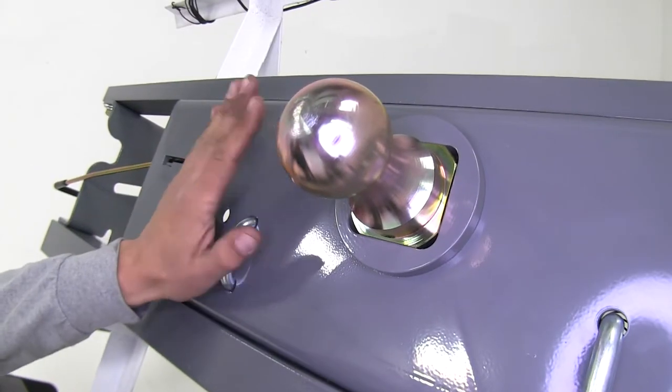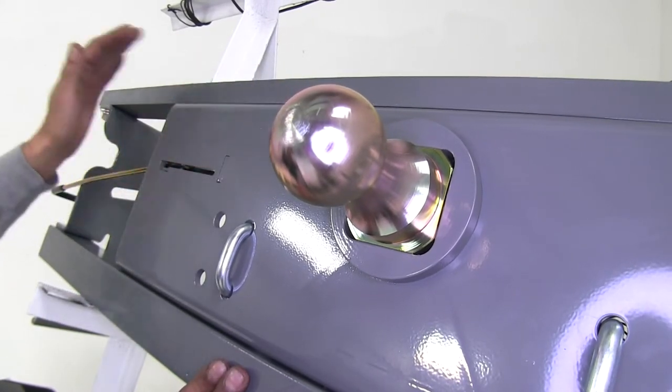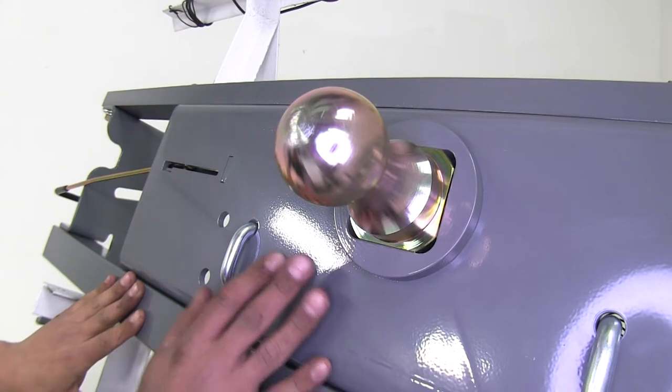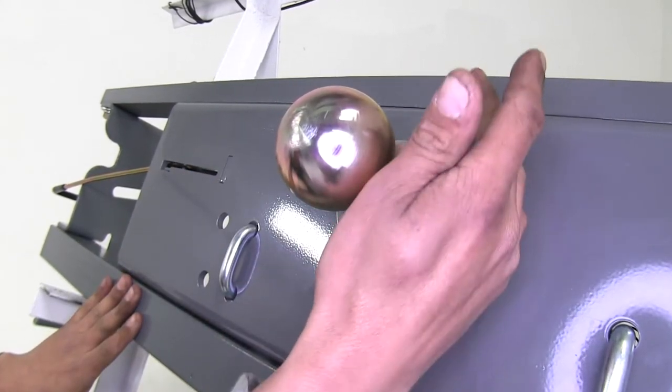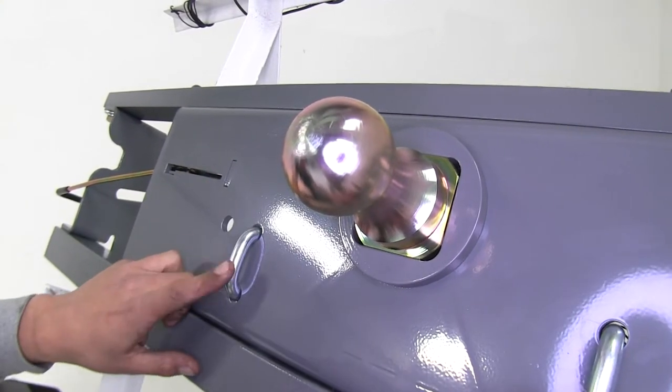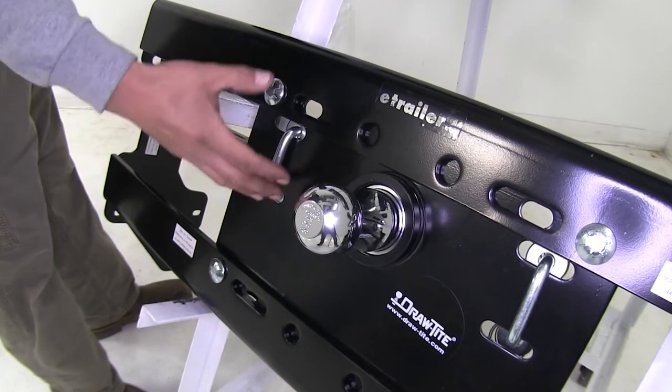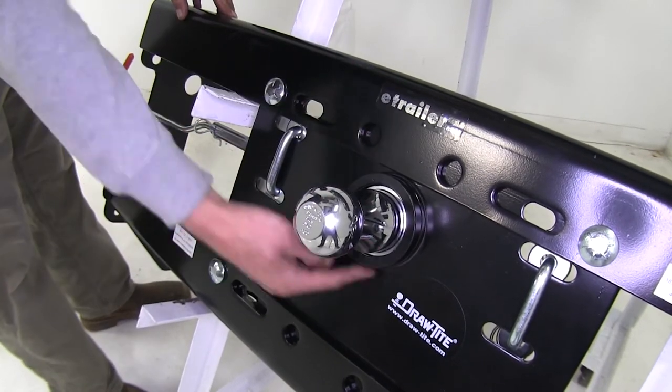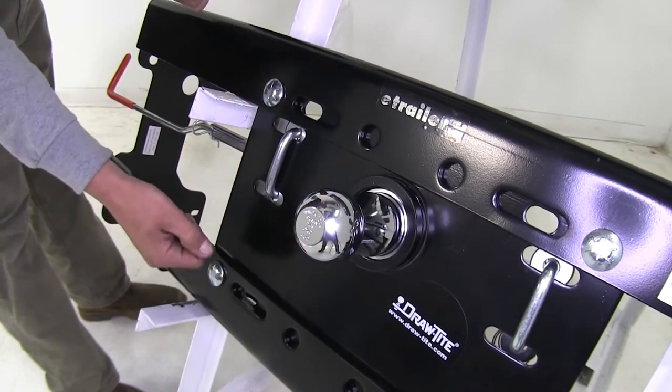Our B&W turnover ball, that's going to be relatively the same as far as the cross bars and frame brackets, but here in the middle, since this is all going to be under the bed, we're only going to have to cut one large hole in the center for our ball to come out, as well as our safety chain loops. And the hide-a-goose is going to be relatively the same, with just cutting one large hole, as well as the safety chain loops, and our brackets going to install the same.